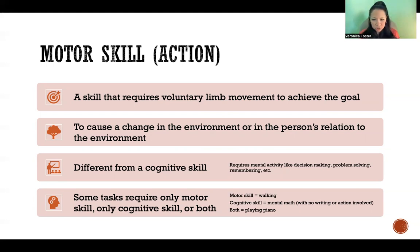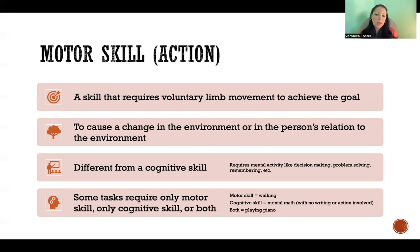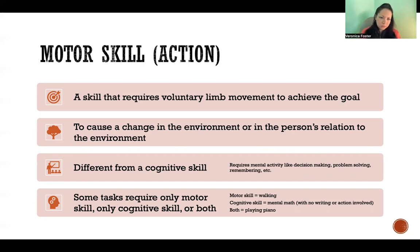A motor skill causes a change in the environment or in the person's relation to the environment. This is different from cognitive skill, which requires mental activity — things like decision making, problem solving, and remembering — and does not require any actual voluntary limb movement. Different tasks will require motor skill, cognitive skill, some both, or other types of skills.